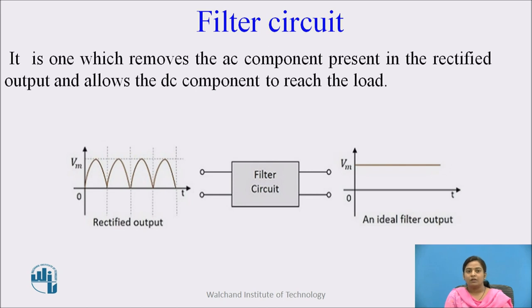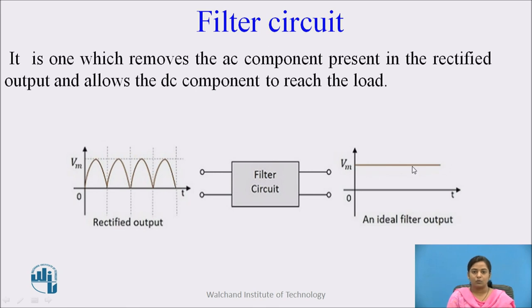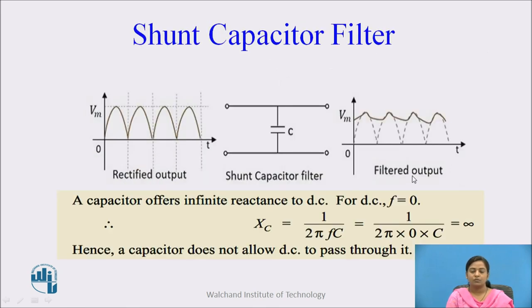The filter is the one which removes the AC component present in a rectifier output and allows the DC component to reach the load. So the basic working of a filter is to remove the AC component from the input and allow only the DC component at the output. There are different types of filters, like capacitor filter, pi filter, and choke filter.